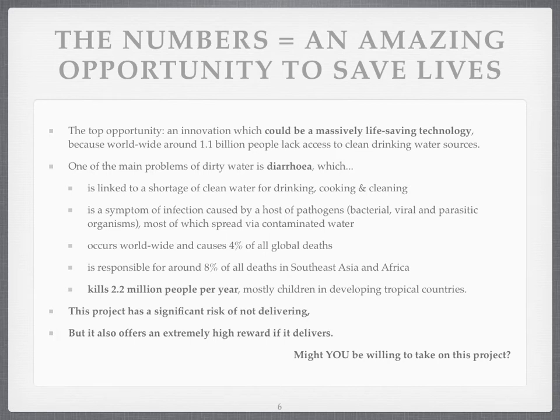The numbers are amazing. Around 1.1 billion people in the world lack access to clean drinking water, and that causes lots of different problems, including diarrhoea. That accounts for 4% of all deaths worldwide from bad water, and 8% of all people in Southeast Asia and Africa. Across the world it kills 2.2 million people per year, mostly children in developing tropical countries. Comparing that 2.2 million with 1.1 billion people who lack access, you're looking at 0.2% of a population dying every year — 1 in 500 dying every year.